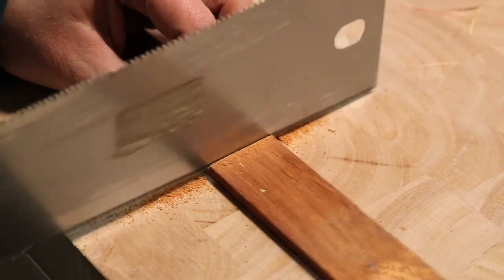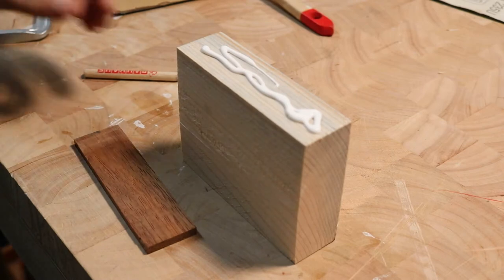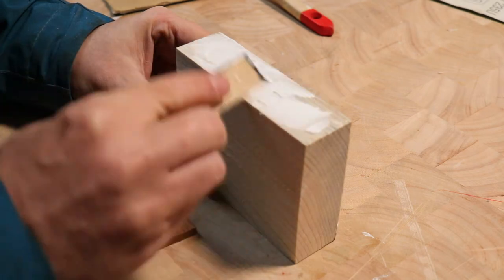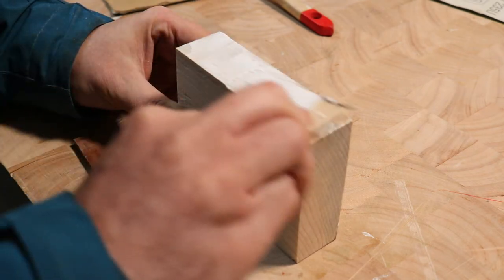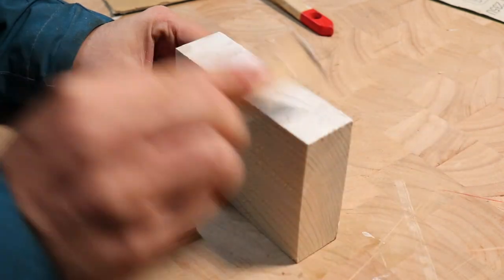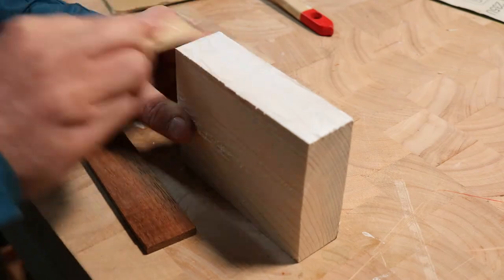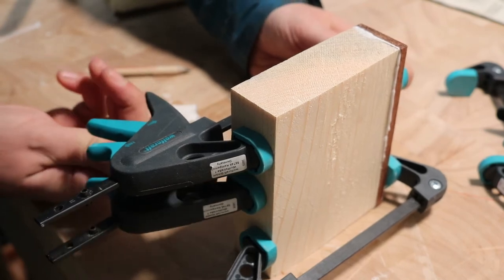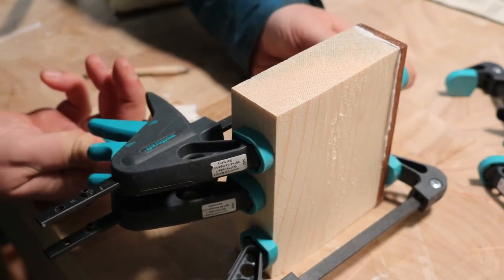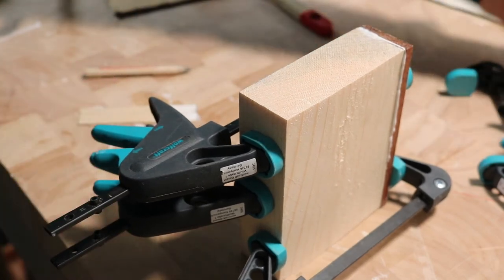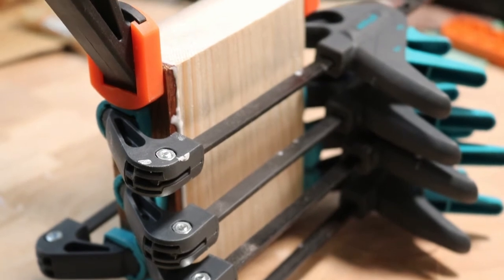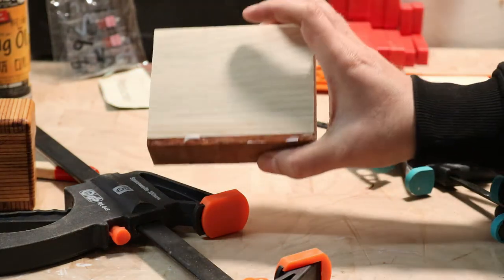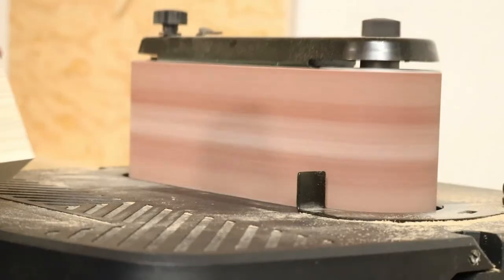I then cut the hardwood strip to the length of the block and glued it all together. After the glue dried I took the stand to the spindle sander to remove any glue stains and the cut marks from the table saw.